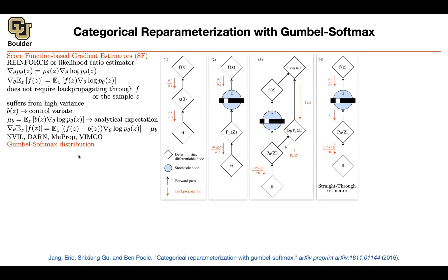What is Gumbel Softmax? This is exactly what we're going to do now. This is going to give you the reparameterization trick that you need, but it's going to give it to you for categorical variables, where z is discrete. If z is discrete, it's a categorical variable — its distribution has, for instance, k options.